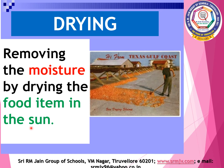Let us discuss about the first method of food preservation, that is drying. In this method, food items are dried in the sun in order to remove the moisture content. Drying inhibits the growth of microorganisms through the removal of water. Drying is one of the oldest methods of food preservation. Certain food items like grains, papad, fruits and vegetables are preserved by this method.